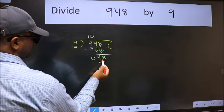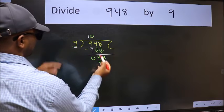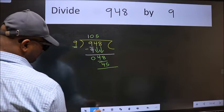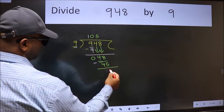Now 48. A number close to 48 in the 9 table is 9 times 5 equals 45. Now we should subtract. We get 3.